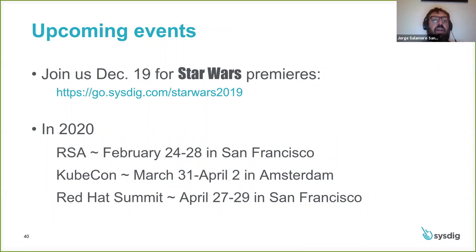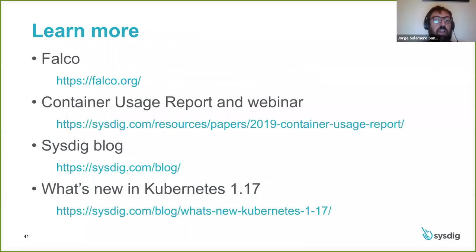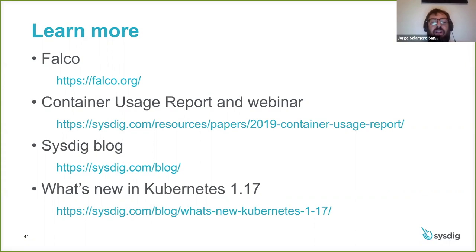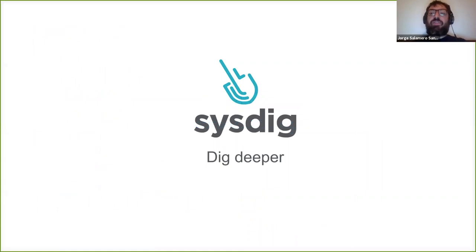If you like all this, you can find Sysdig and some members of the Falco community at some upcoming events. We are running a number of Star Wars premieres — if you want to come with us to the cinema and enjoy Star Wars, you can get your invite through that link. Next year, you'll find us at RSA, KubeCon, and Red Hat Summit, just to mention a few events. If you want to learn more, don't forget to check out the falco.org website. I also wanted to include a link to the container usage report and webinar I quoted before. Don't forget to subscribe to the sysdig.com blog. Last week, Kubernetes 1.17 was released, and we always like to write a blog post on what's new — that one became very popular — so I'd like to share that link again with you. Thanks very much for listening today, and I hope you enjoyed.